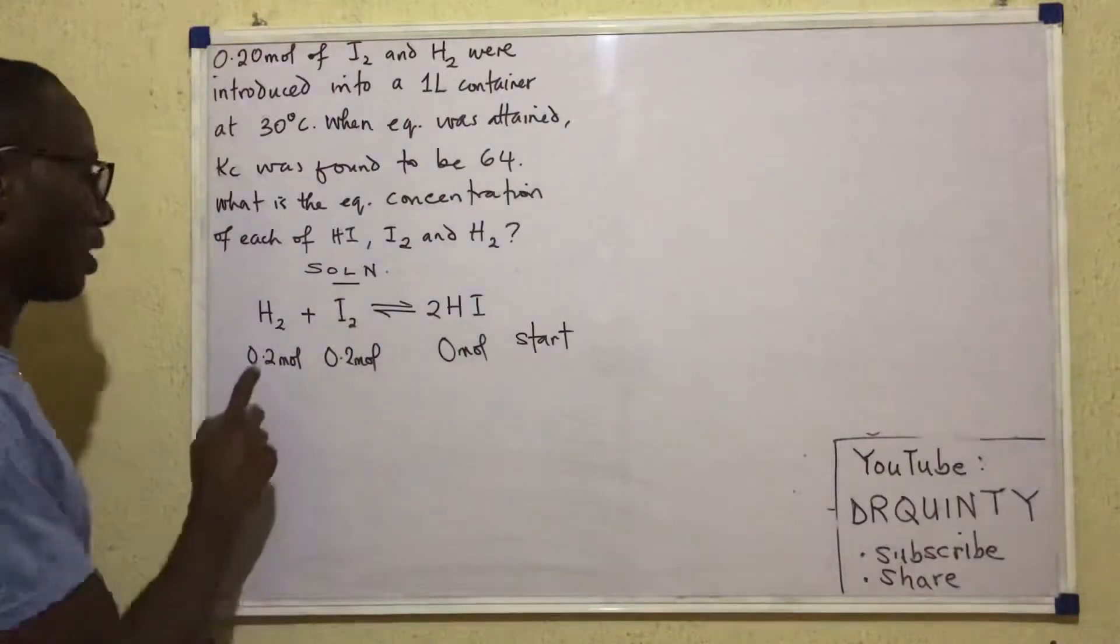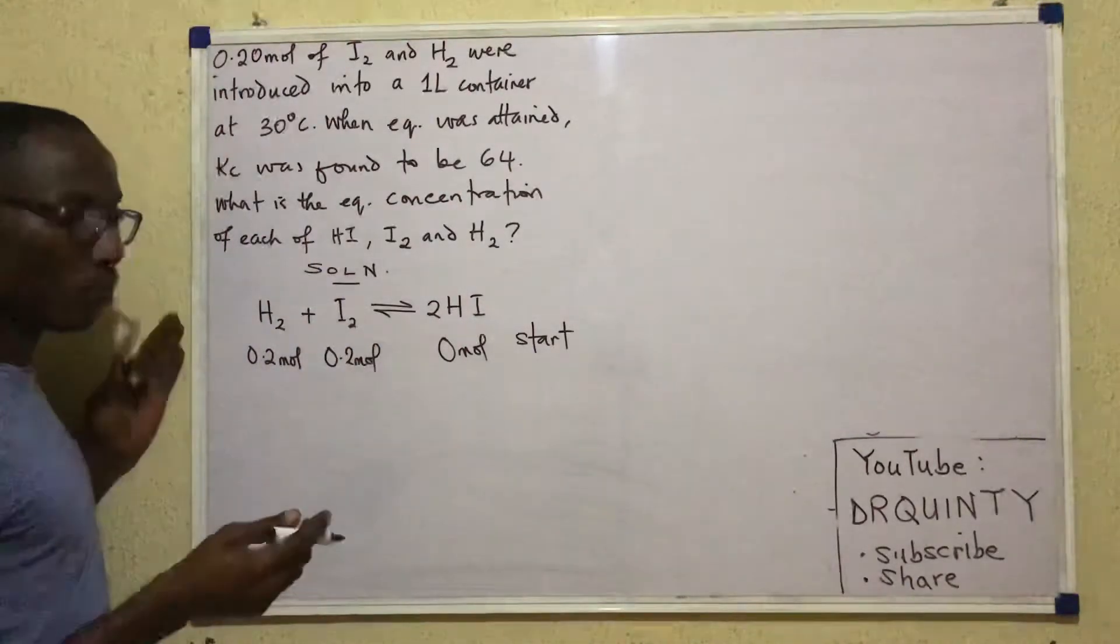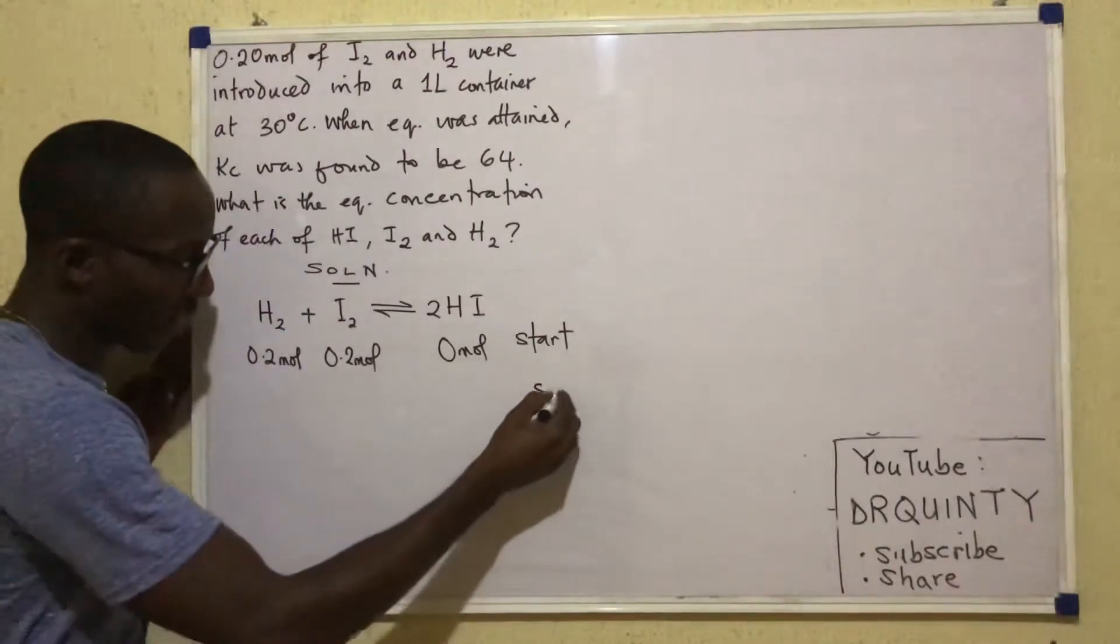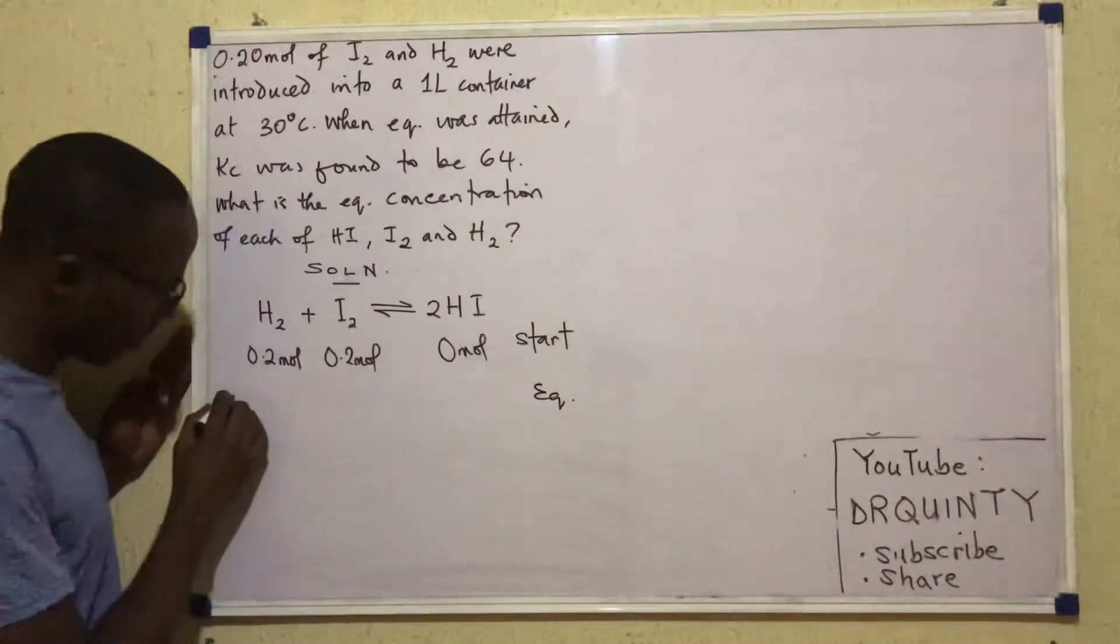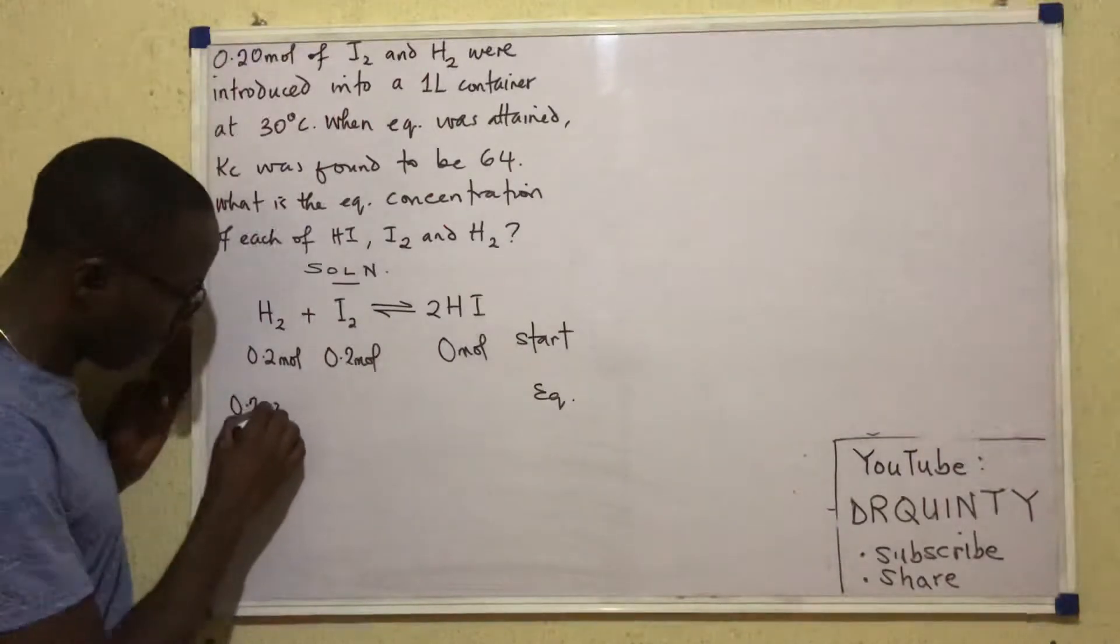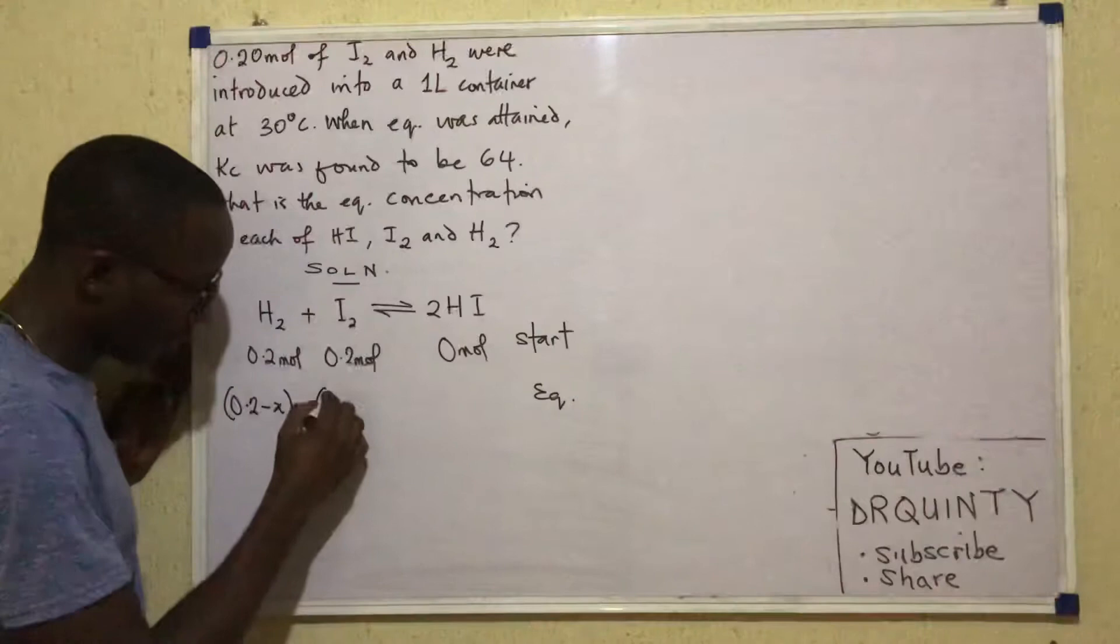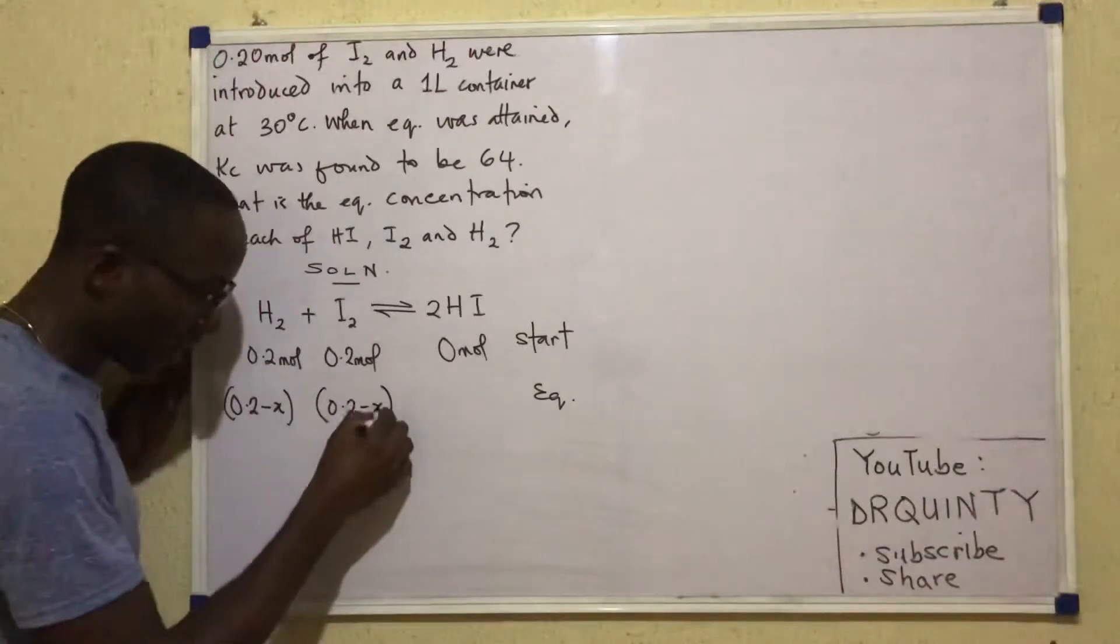So let's assume that the quantity of H that was used up was X moles. So it means that the H that will be left by the time equilibrium is attained will be 0.2 minus X moles. For I, it will also be 0.2 minus X.